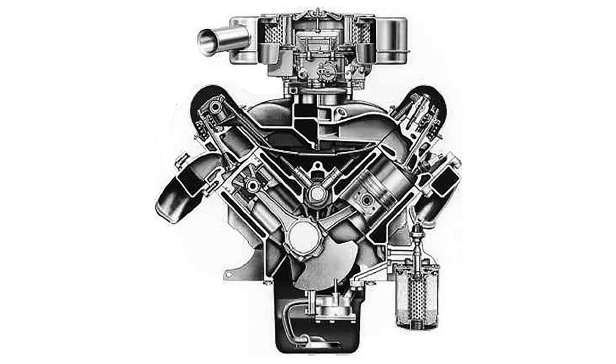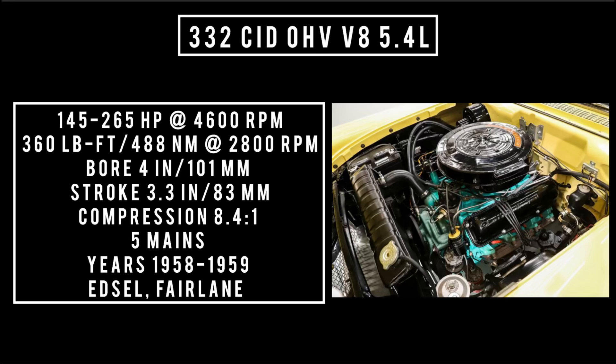Introduced in 1958: the 332 cubic inch displacement overhead valve V8, 5.4 liters. Good for anywhere between 145 to 265 horsepower at 4,600 RPM, 360 pound-feet or 488 newton meters at 2,800 RPM, with a bore of 3.6 inches and a stroke of 3.6 inches. Compression was 8.4 to 1, with four main bearings, built of cast iron. Used between 1958 and 1959, mostly in the Edsel in 1958, also used in the Fairlane. Used mechanical lifters until mid-year 1958, then switched to hydraulic.